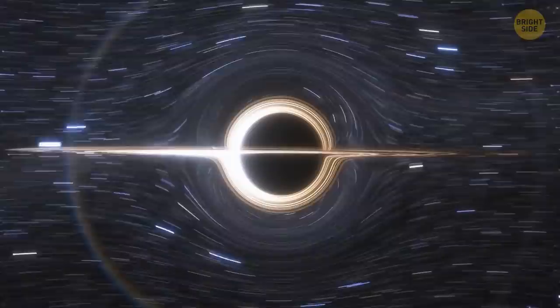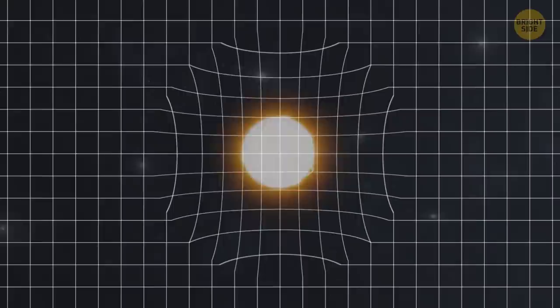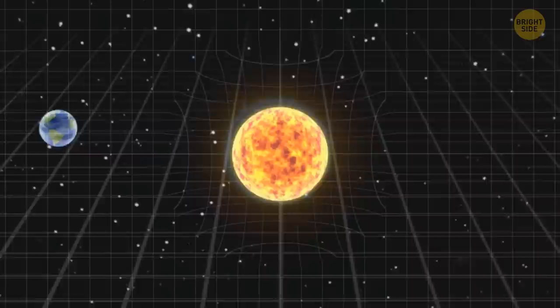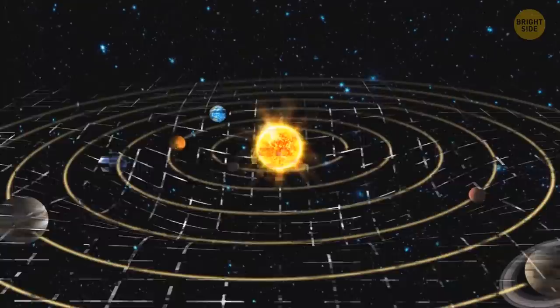Now let's put something heavy, weighing as much as our sun. Notice how it sagged the net? And now there's a deep funnel here, and any object lying next to it will always fall into this funnel. That's how our solar system works. Small objects like planets and asteroids circle around the funnel with the sun.